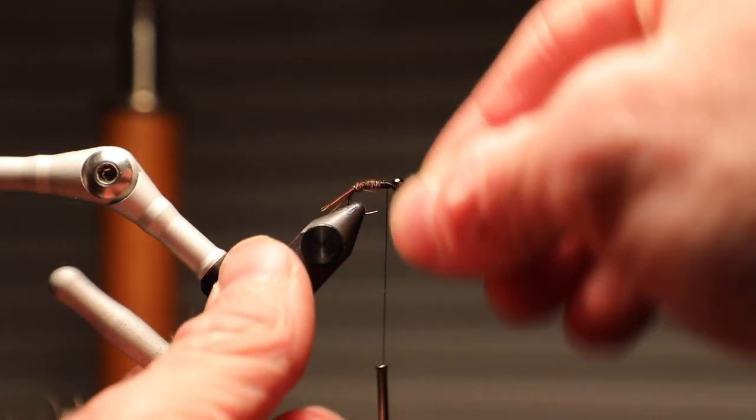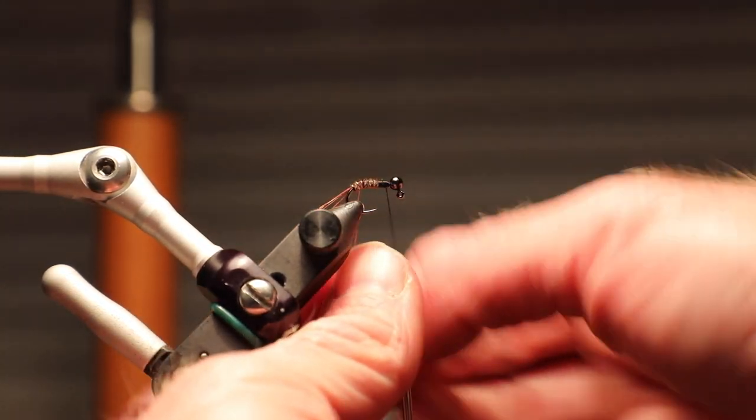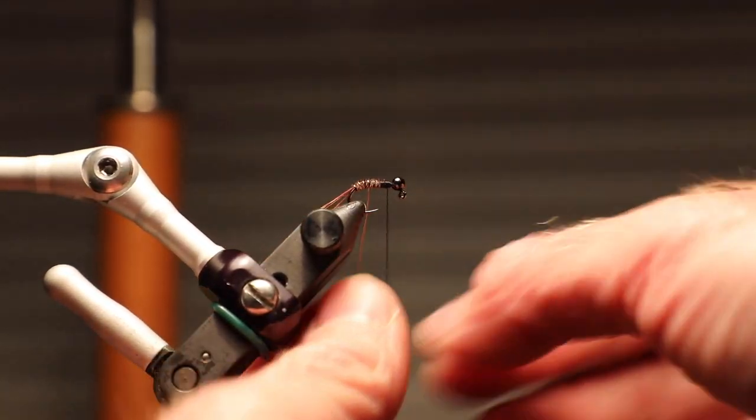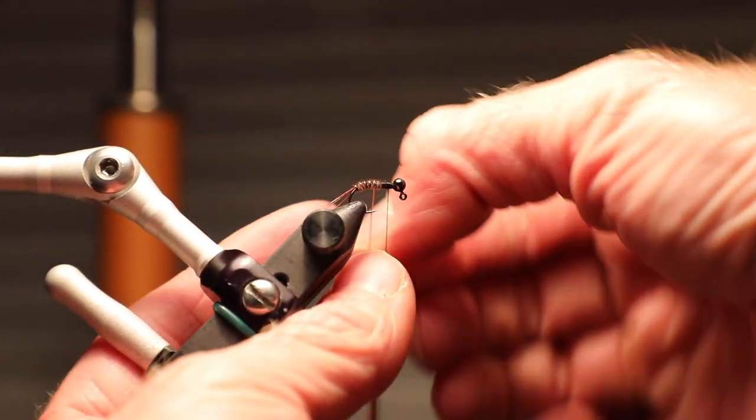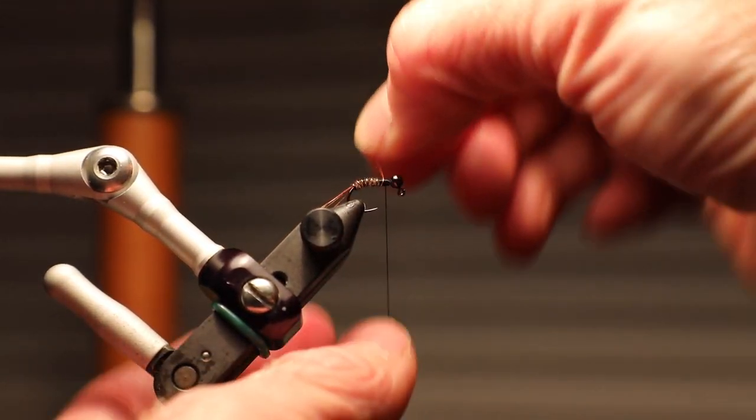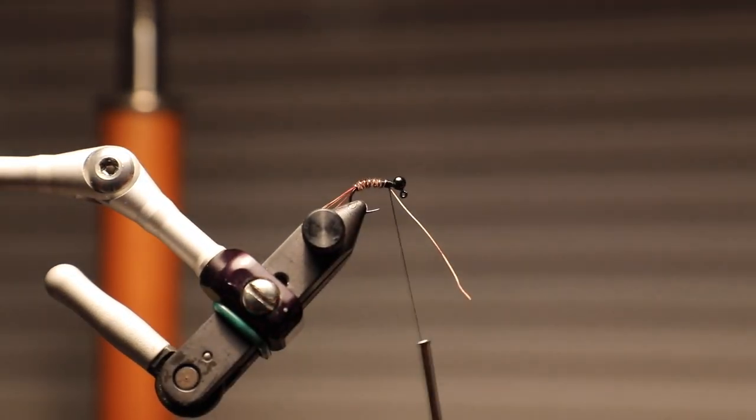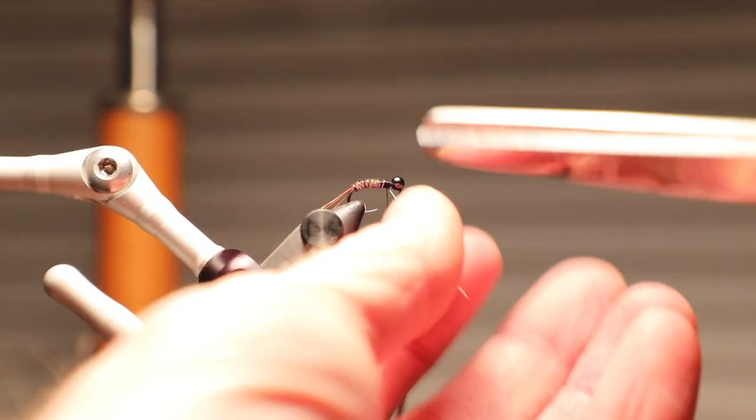Take your copper wire that we tied in. All this really is is reinforcing the fly. The copper wire, yeah, it's a little flash. Maybe the fish like that. I don't know, but you could fish it just fine without that. But it's reinforcing that pheasant tail, which has a real bad tendency to break.